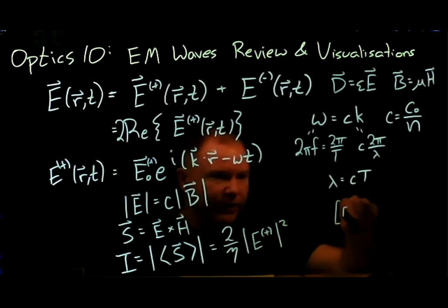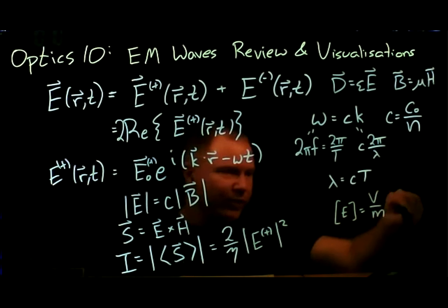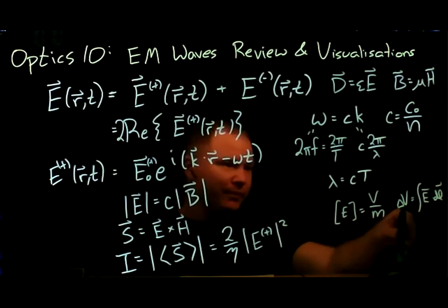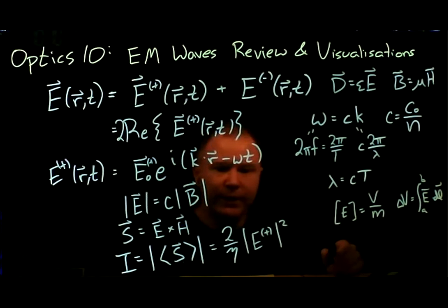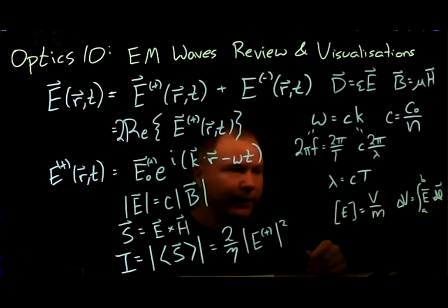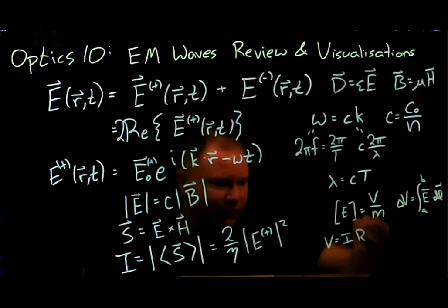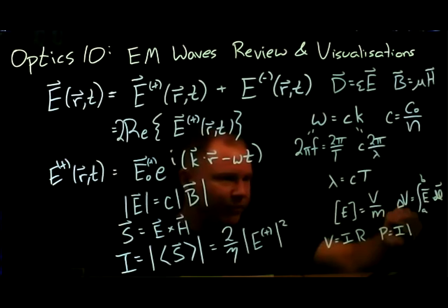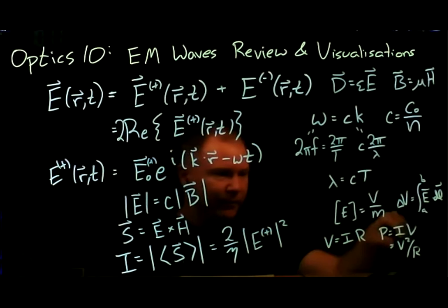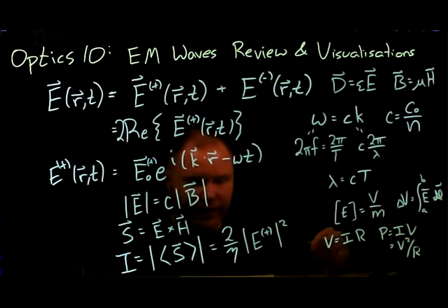The units on electric field are volts per meter — you can remember that because dV is the integral of E·dL. So if voltage is in volts and you integrate over meters, E must be in volts per meter. This thing squared is volts²/m², and we want intensity in watts/m². From circuits, V = IR and P = IV, so P = V²/R, meaning we need something in ohms. So η has units of ohms.